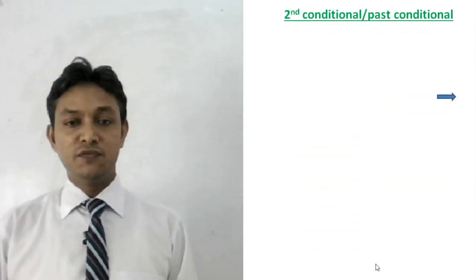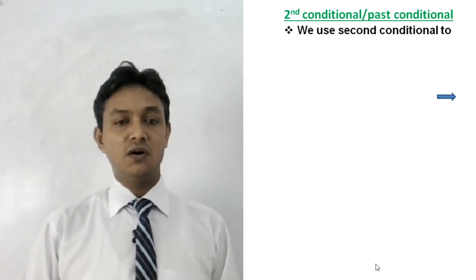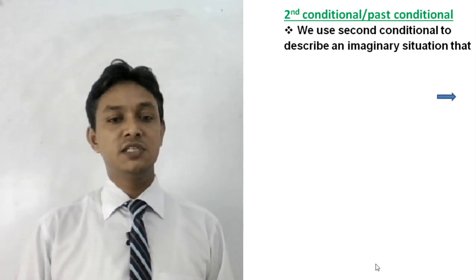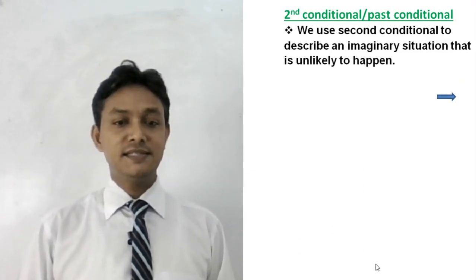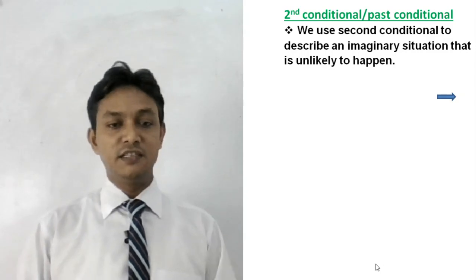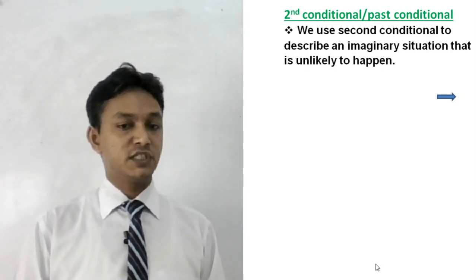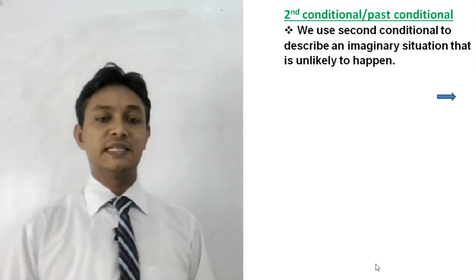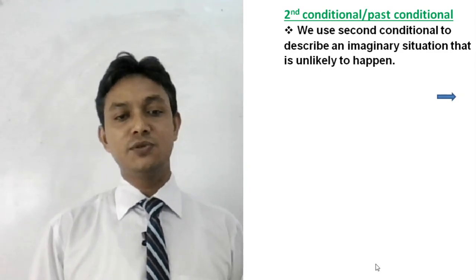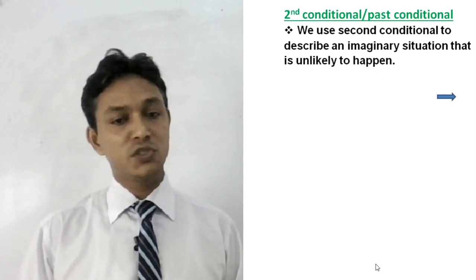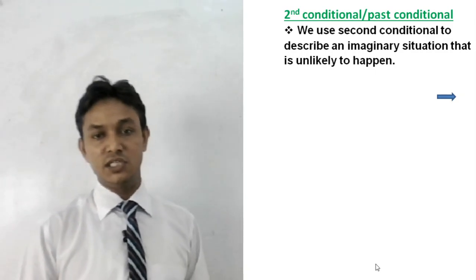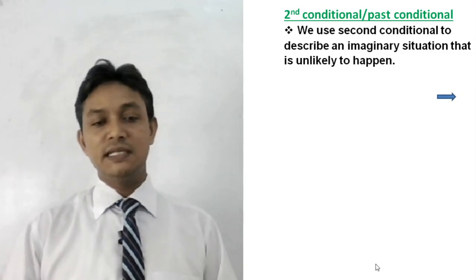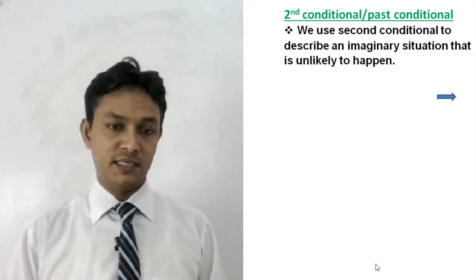The next type is second conditional. We use second conditional to describe an imaginary situation that is unlikely to happen. The difference is: in first conditional, we describe a situation that is very likely to happen in reality, but in second conditional, we describe a situation that is quite imaginary and unlikely to happen.